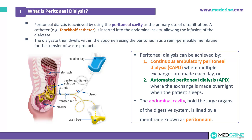In peritoneal dialysis we can achieve treatment using two ways: either continuous ambulatory peritoneal dialysis or CAPD, whereby multiple exchanges are made each day, or by using automated peritoneal dialysis or APD. In automated peritoneal dialysis, the exchange is made overnight when the patient is asleep.